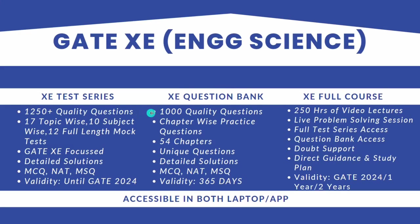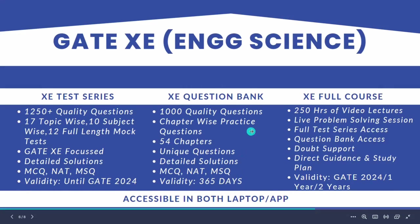Now, for the question bank: it has around 1000+ questions distributed across 54 chapters. For example, in Mathematics, Linear Algebra will have two tests of about 10–15 questions each, and Calculus will similarly have two tests of 10–15 questions. Importantly, the 1250 test series questions and the 1000 question bank questions are completely different — there are no common questions between them. Both sets are entirely unique. The question bank has 365 days validity and is also accessible on both laptop and app, with laptop recommended.